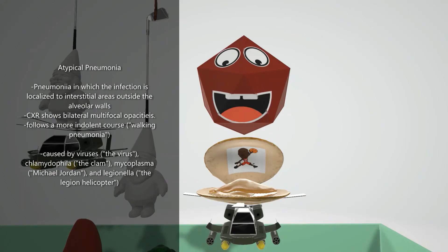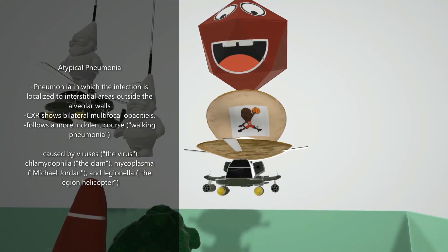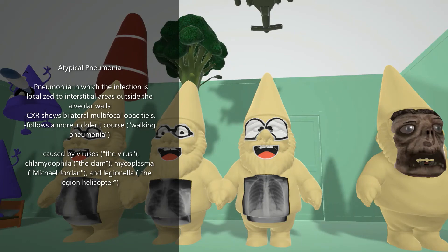The virus is on top of a clam, which represents Chlamydophila — Chlamydophila pneumoniae and Chlamydophila psittaci. On the clam, there's a picture of Michael Jordan for Mycoplasma. And under that, there's the Legion helicopter again for Legionella. This type of pneumonia is also known as walking pneumonia because it follows a more indolent course — hence the guy walking on his head.